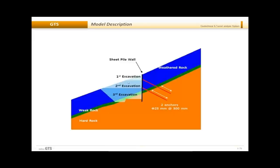Excavation is being done in three stages: the first, second, and third excavation stages. To do the excavation, first we will install a sheet pile wall and provide some anchors. The anchors will be pre-stressed, grouted inside the hard rock, and ungrouted in the weathered and weak rock. The slope has three layers: weathered rock, weak rock, and hard rock. We are going to model this in GTS, starting from the basics.